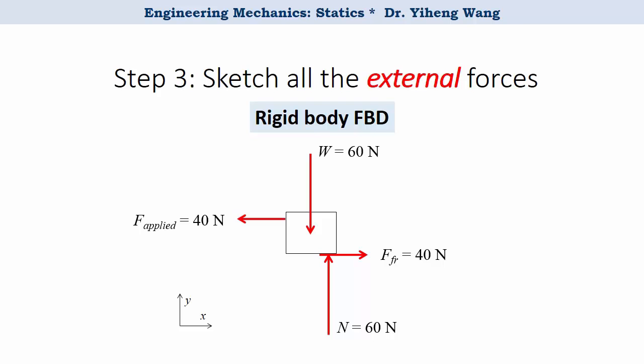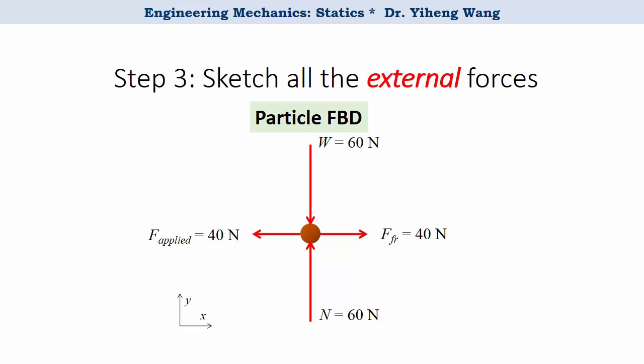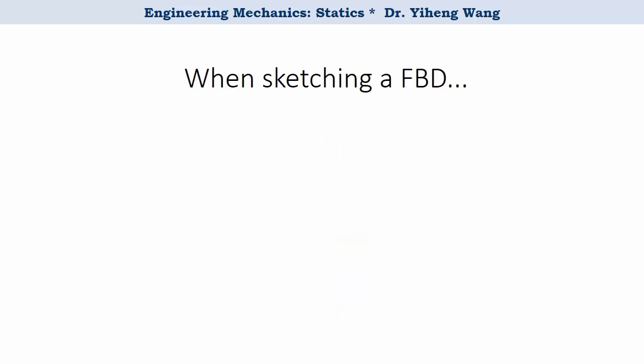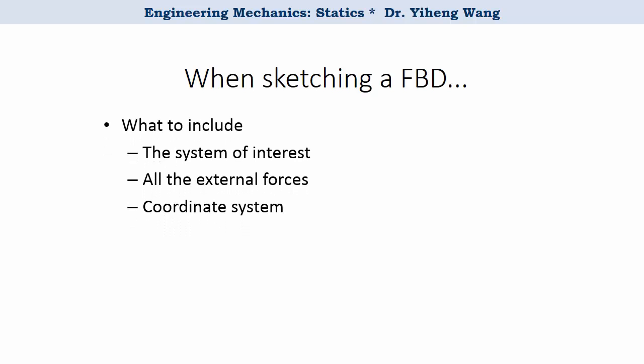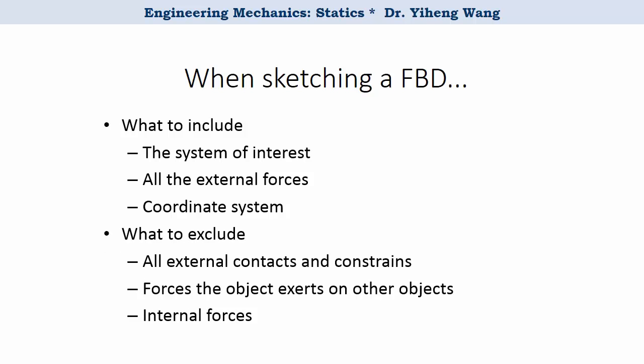Note that for a rigid body diagram, when you demonstrate the location of the application point of the force, it is important to be as accurate as you can. For a further simplified particle free body diagram, all forces simply act on the particle, which is represented by a point with mass in space. As a summary, when you sketch a free body diagram, make sure to include the object of interest, all the external forces, and an appropriate coordinate system. You should not include any other objects, forces exerted on other objects — for example, the force exerted by the dog on the floor — and also you should not include internal forces.